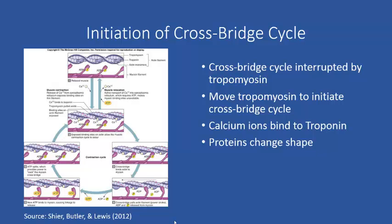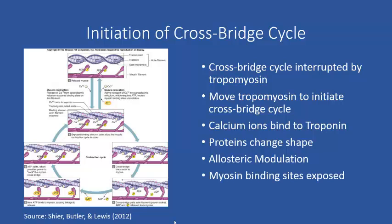Remember that an inorganic substance binding to a protein and causing a shape change — the example here being calcium binding to troponin — is referred to as allosteric modulation. We've seen many examples of allosteric modulation; it's one of the ways proteins change shape and one of the ways physiological mechanisms are regulated. This is another example of that broader phenomenon. Once the tropomyosin is removed, the myosin binds to actin and the cross bridge cycle proceeds.